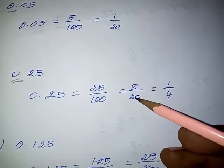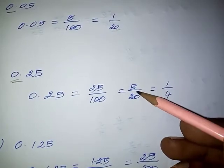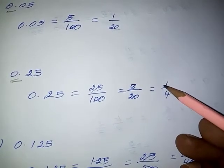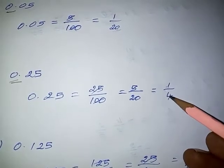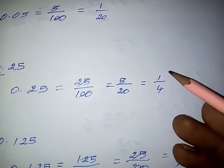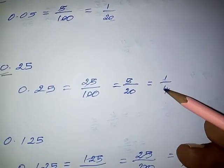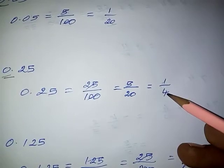Again, 5 and 20 can be divided by the 5 times table: 1 five is 5 and 4 fives are 20. So the required fraction of the given decimal is 1 by 4.